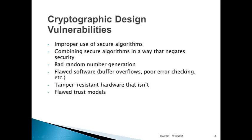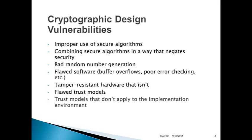Flawed trust models. When you're implementing cryptography, you have to develop a model of trust — who trusts whom, under what circumstances, how trust is proven, how trust may be transferred from one entity to another. If that model is inherently flawed, if it's wrong, incorrect, or illogical, your cryptography won't work. Then you can have a good trust model that doesn't have flaws in it but has nothing to do with the environment you're working in. That won't work either.